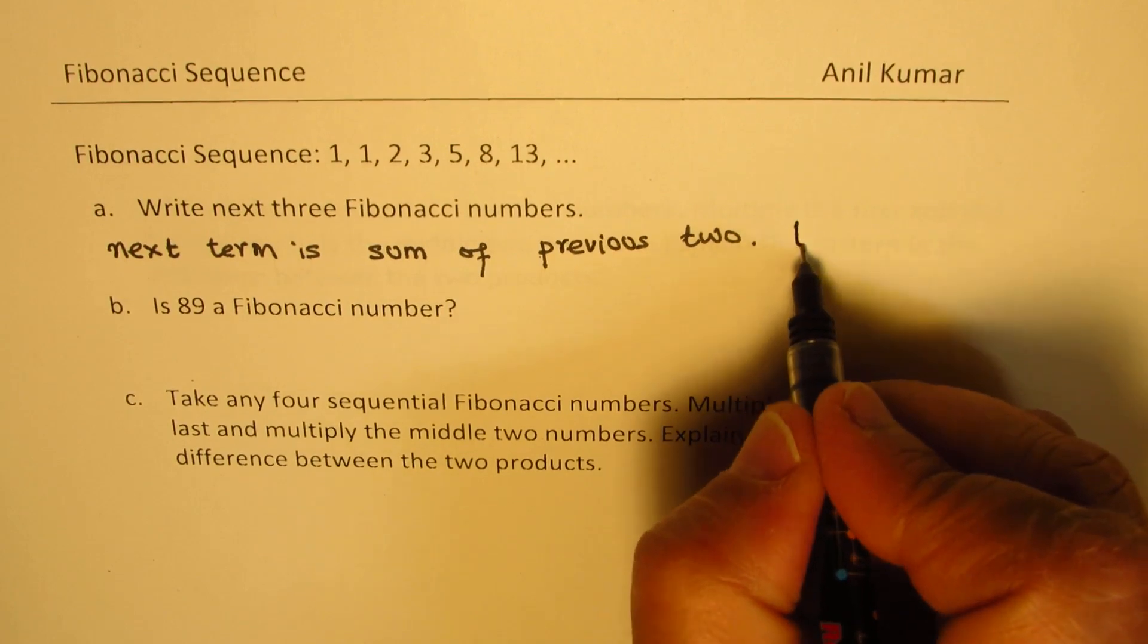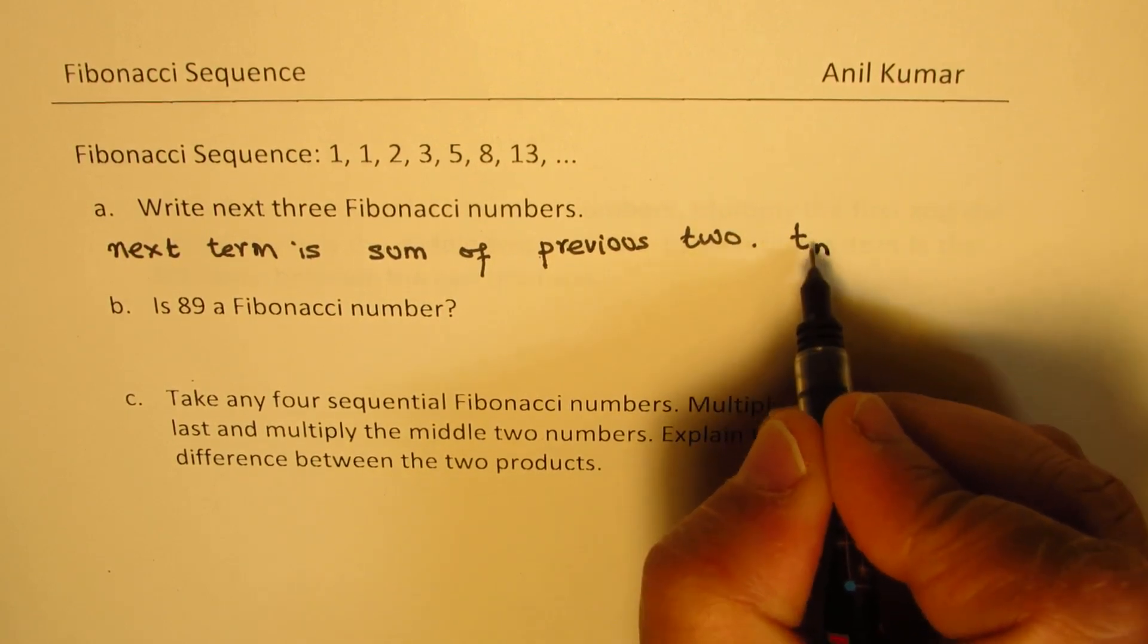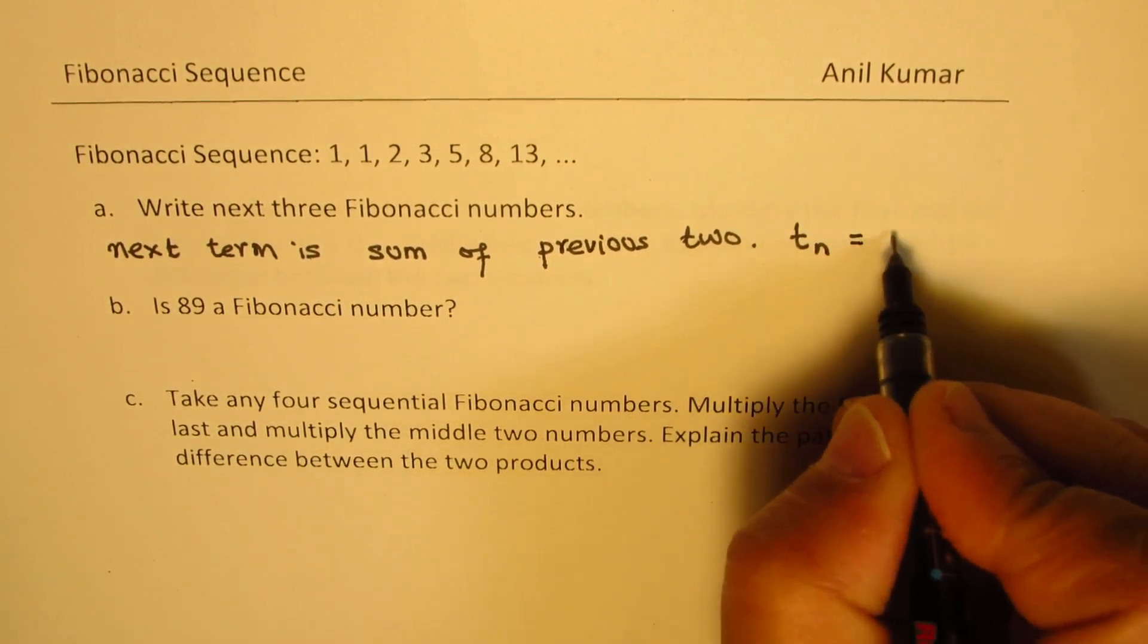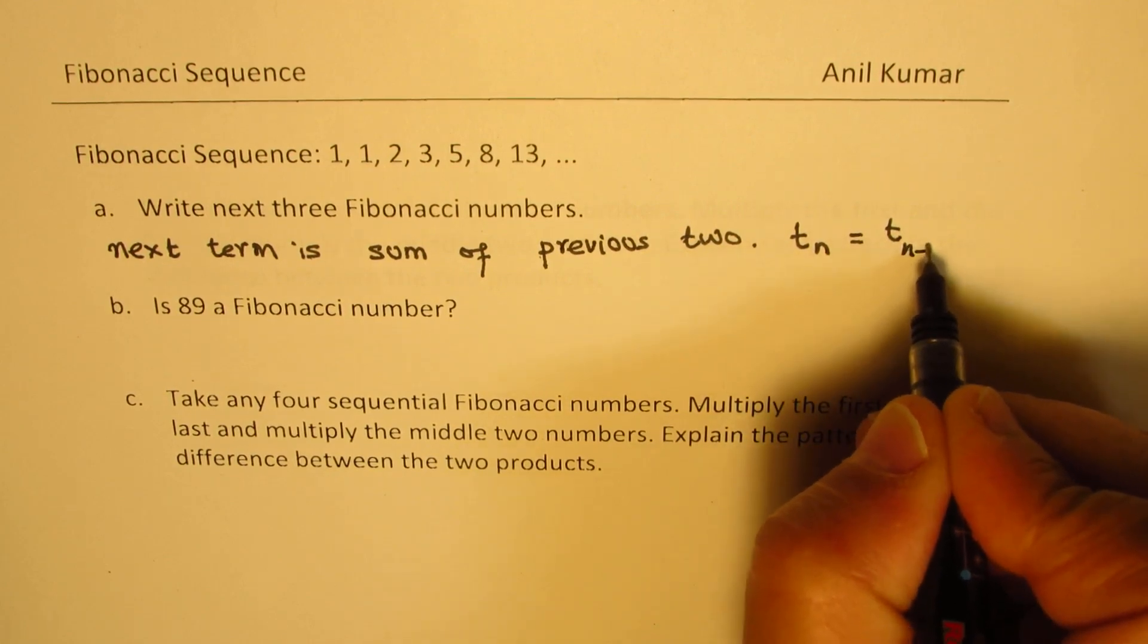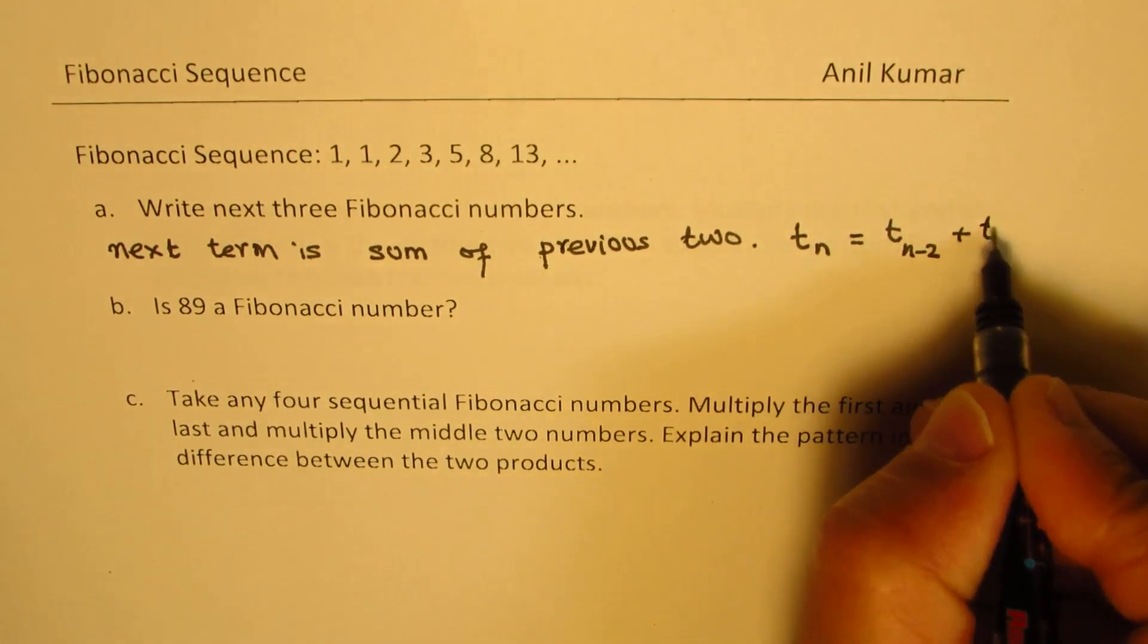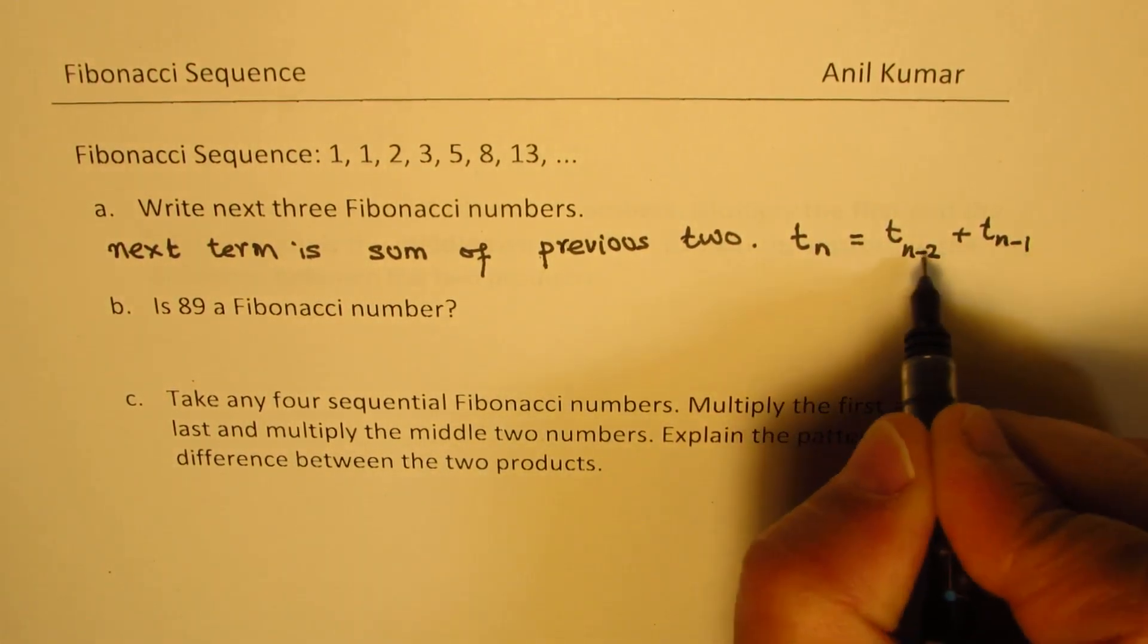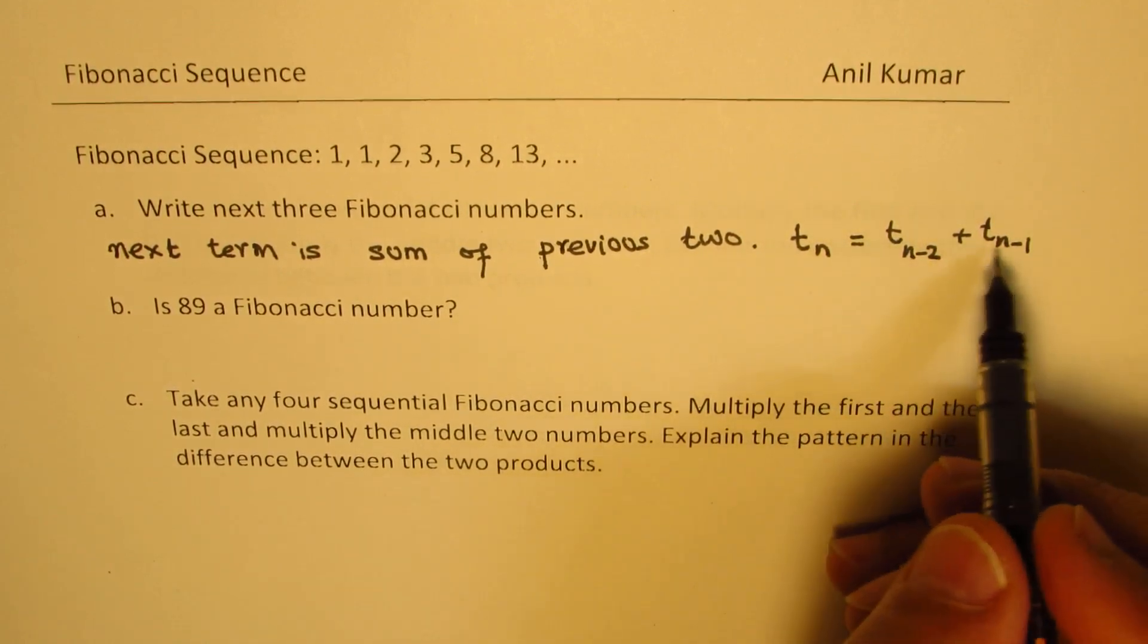In technical language, we say Tn, that is the nth term, is Tn-2 plus Tn-1. So these are the previous two terms which came before.